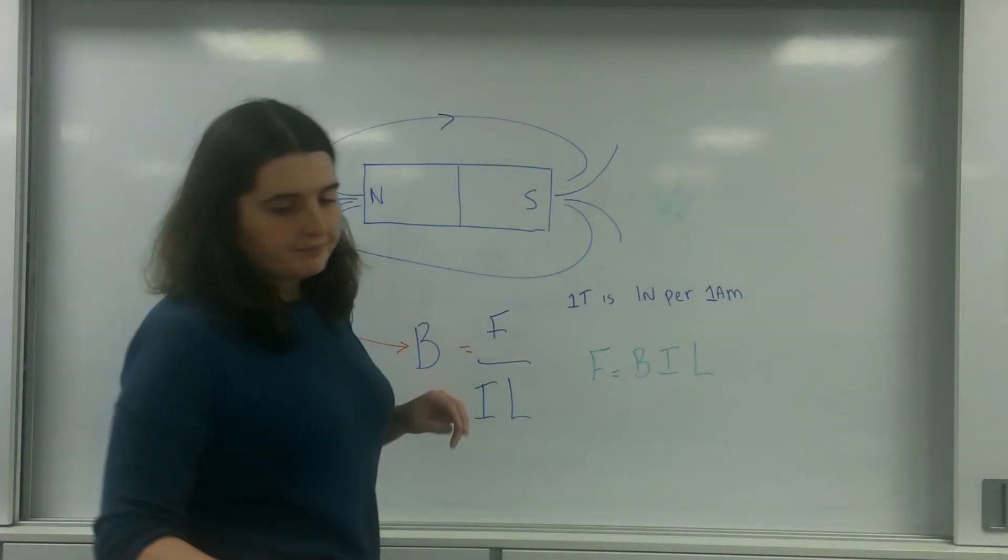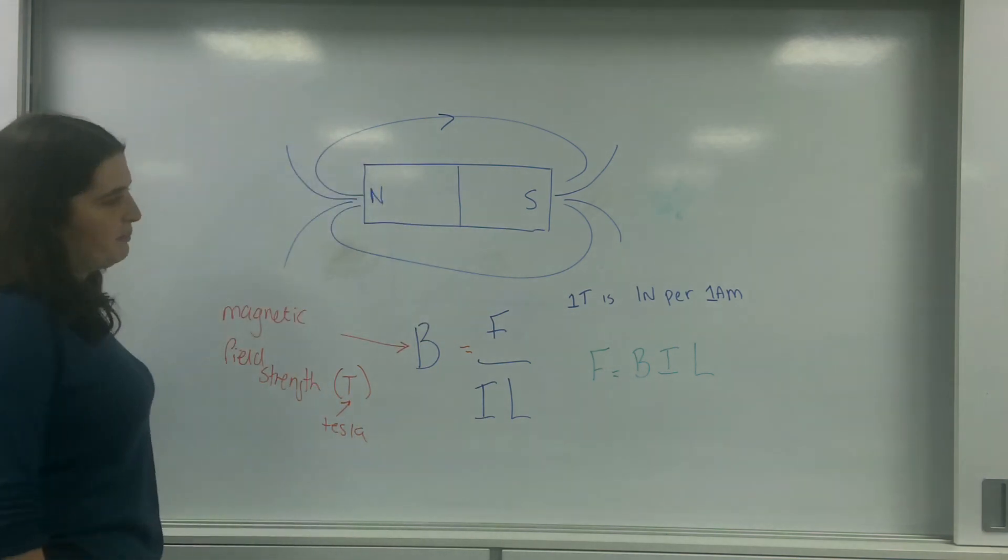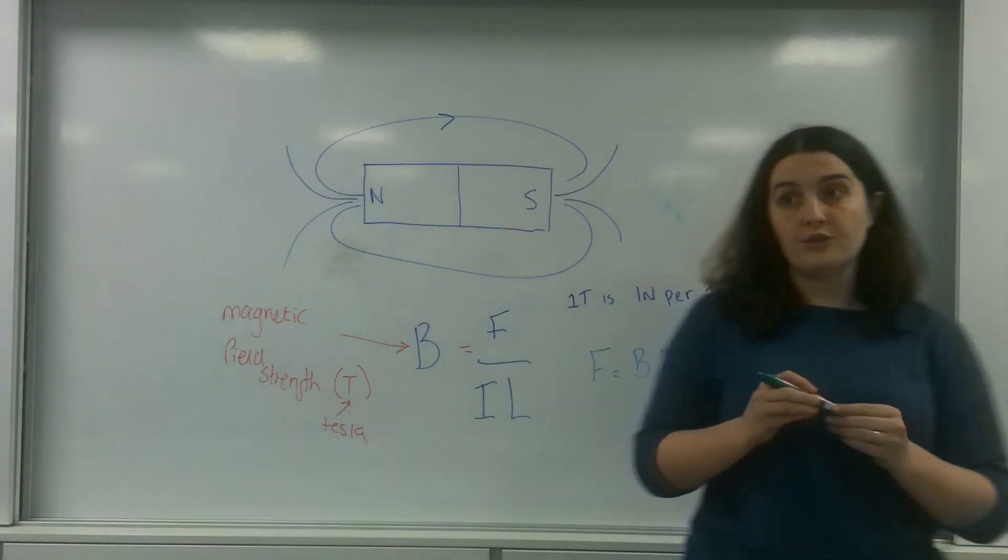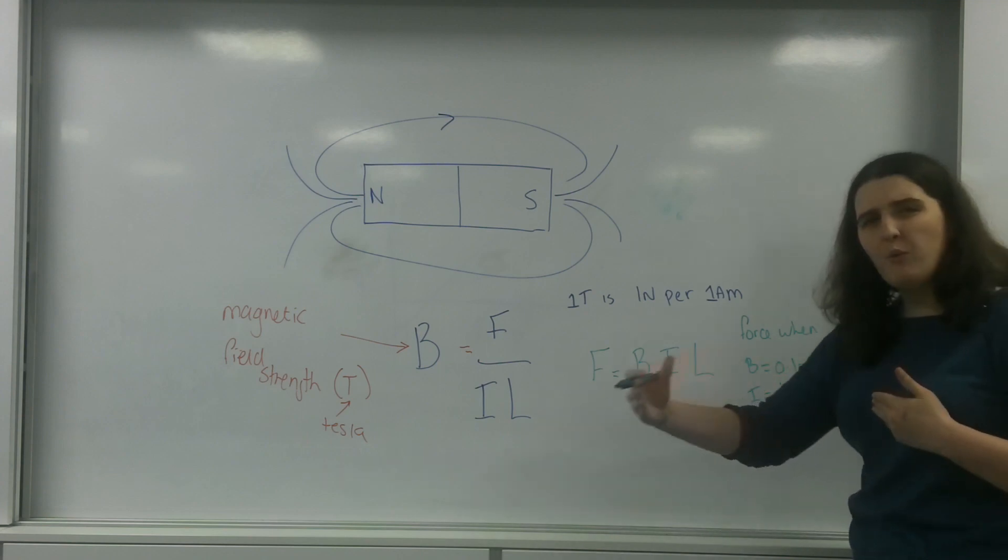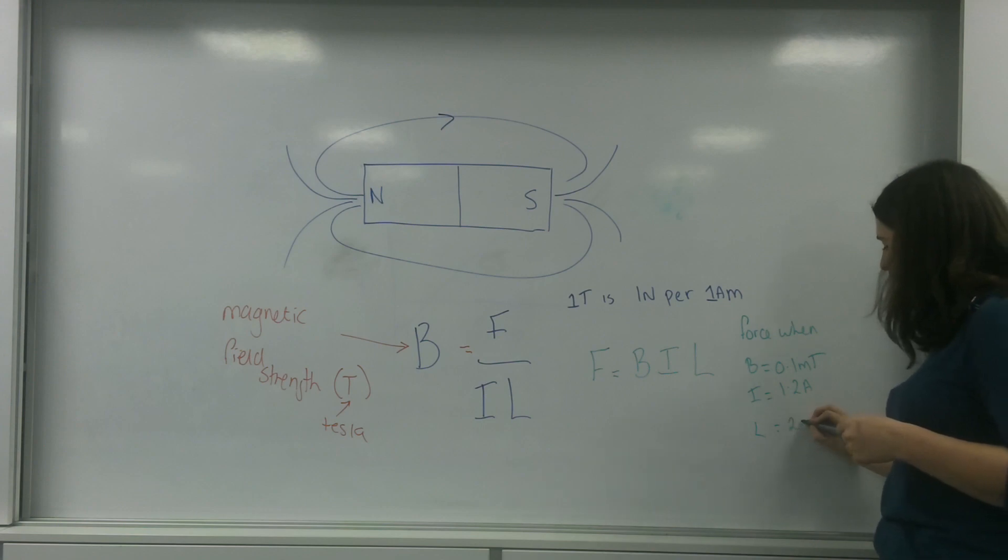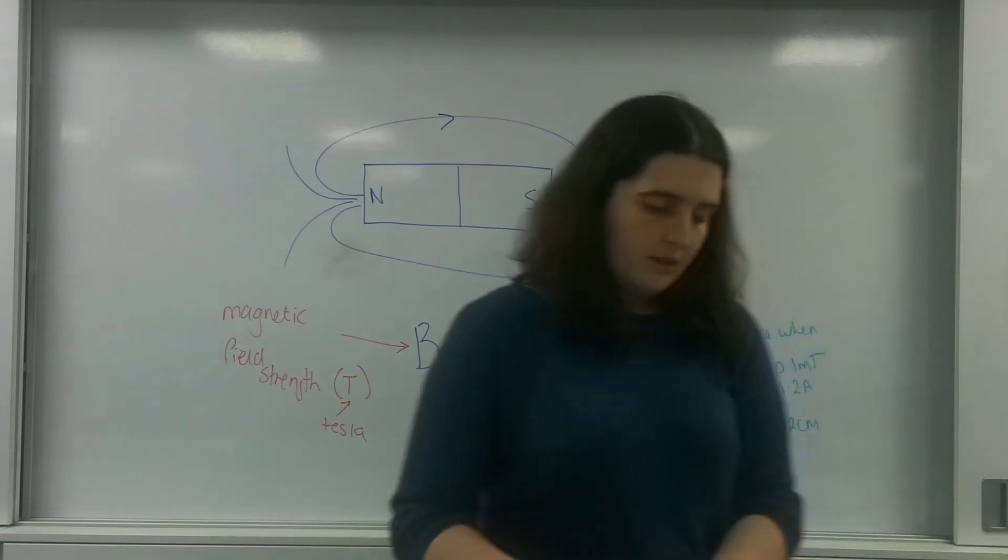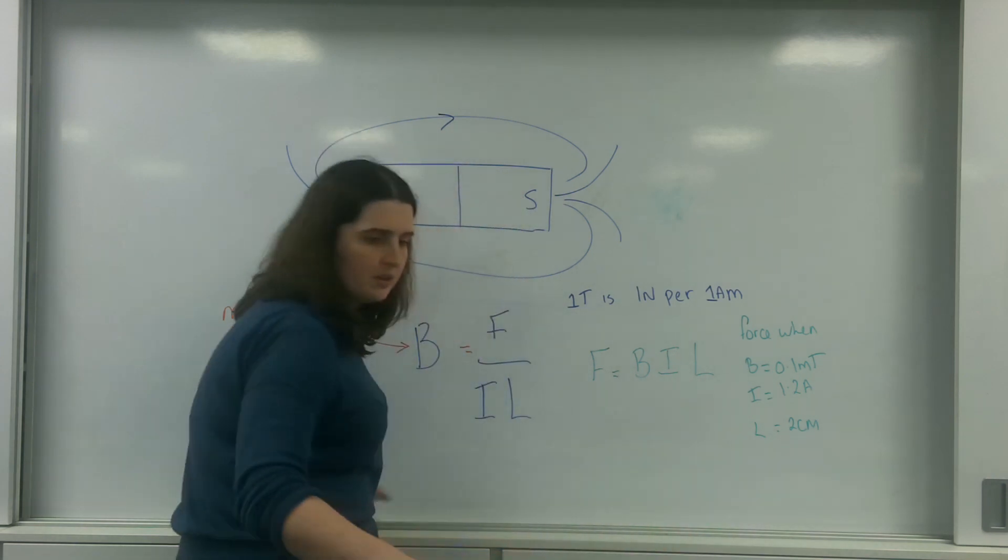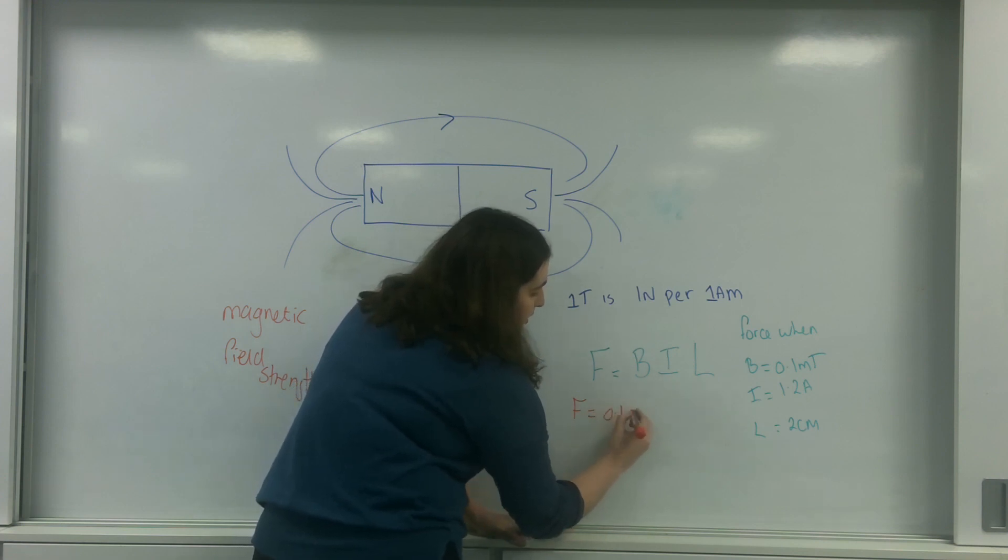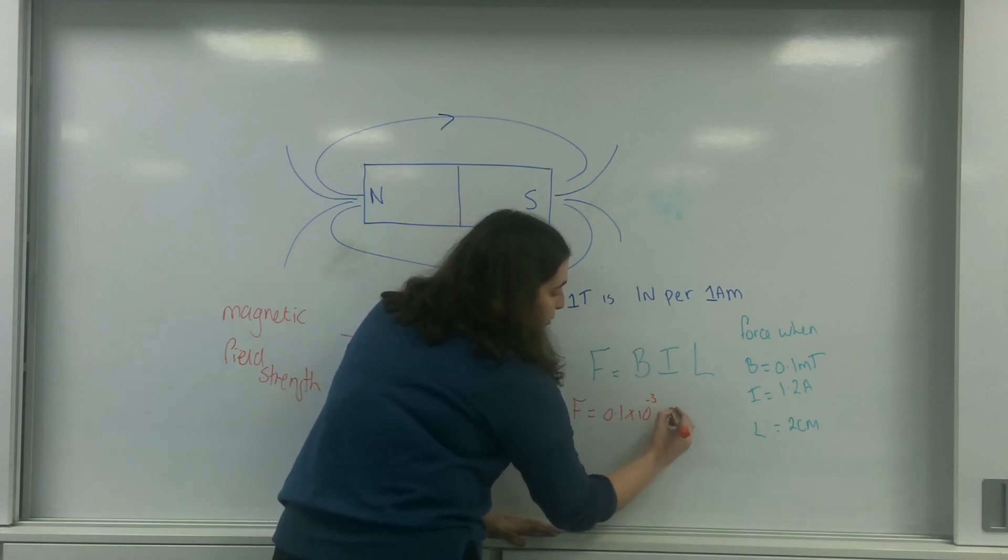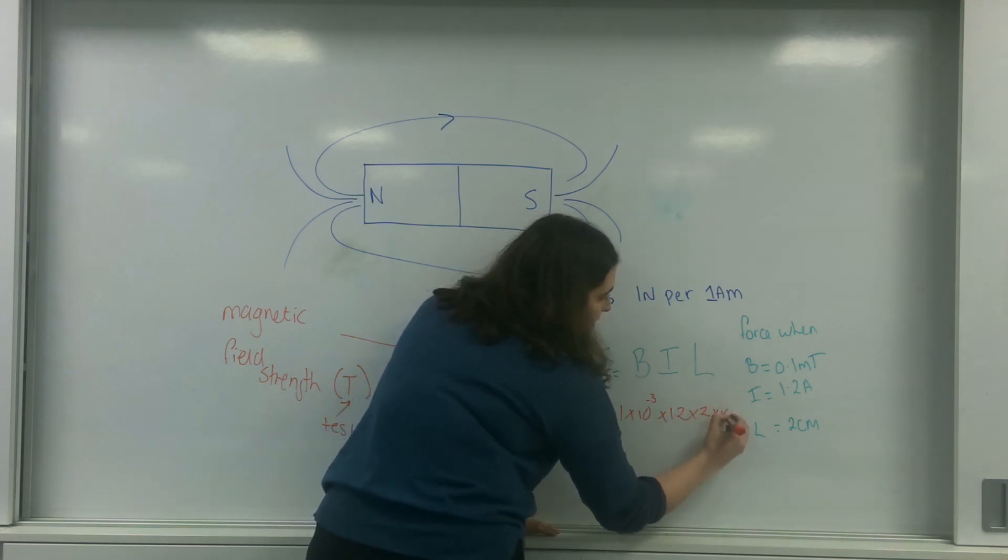So let's have a little go at this. Let's actually put some numbers into this. So I want to know the force when B equals 0.1 millitesla, the current equals 1.2 amps, and the length of my wire is going to be 2 centimeters. So let's do this in red. F equals 0.1 times 10 to the minus 3 times by 1.2 times by 2 times 10 to the minus 2.